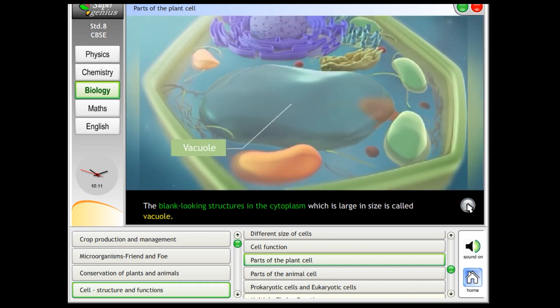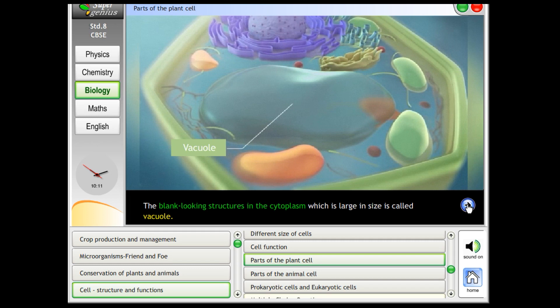The blank looking structures in the cytoplasm which is large in size is called vacuole.